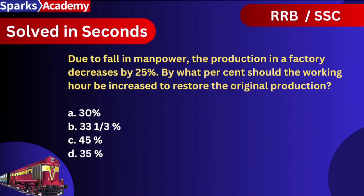So the question is: due to fallen manpower, the production in a factory decreases by 25%. By what percent should the working hours be increased to restore the original production? So the factory production has a 25% fall. Why? Because manpower falls.